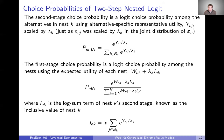Now working backwards to the first step: it turns out we can also treat the first-step choice probability as a logit model, where the decision maker is choosing among the nests. We can treat each nest as an alternative in the first step. The choice probability is again just the standard logit choice probability, and the representative utility for a nest is that W — the nest-specific representative utility from the previous slide.